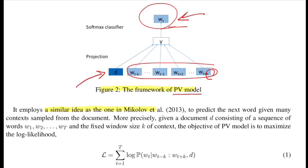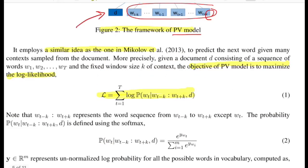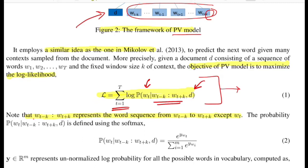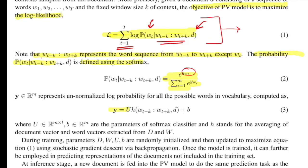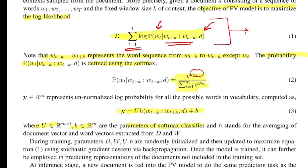The objective is to maximize the log-likelihood, given by an equation that tries to maximize the classification probability of every word from its window and document, applying a summation across all words to predict across multiple windows. The probability p(Wt | Wt-k to Wt+k, d) is defined using softmax — the numerator is the probability of that word and the denominator is the summation across the entire vocabulary to get a normalized value between 0 and 1. They define y as the numerator in the softmax, which is the output from a linear transformation, where U and B are the learned parameters of the softmax classifier.